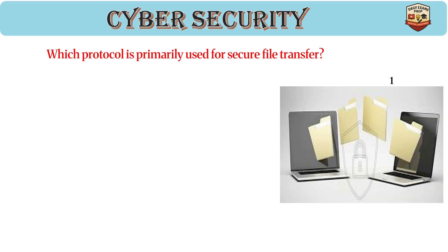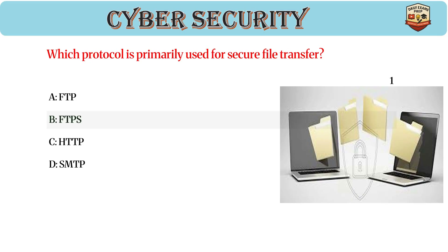Which protocol is primarily used for secure file transfer? Answer: B, FTPS. FTPS adds SSL/TLS encryption to FTP, securing data during transmission. Common ports: 990 (implicit) and 21 (explicit).